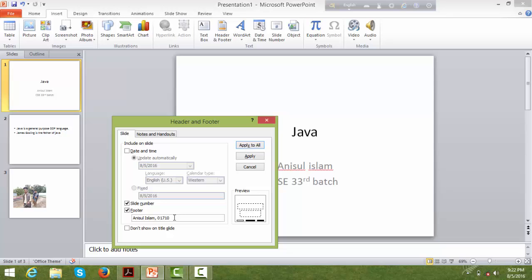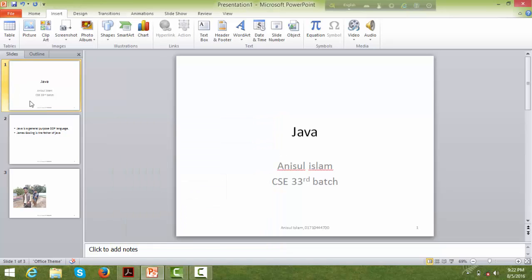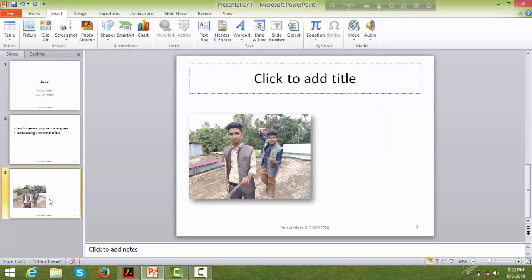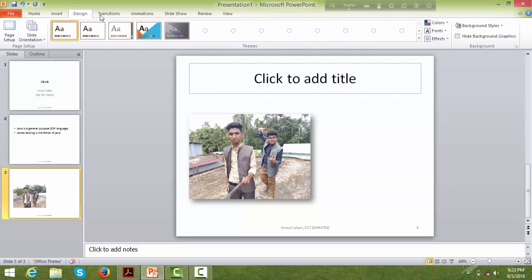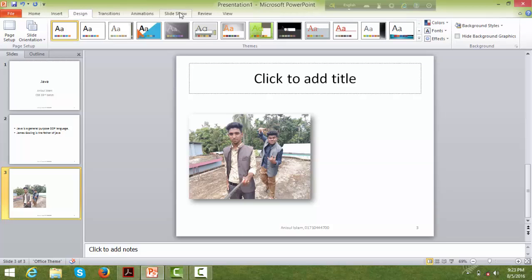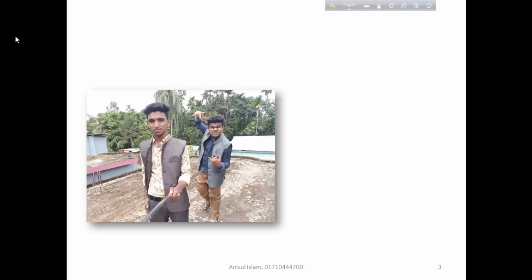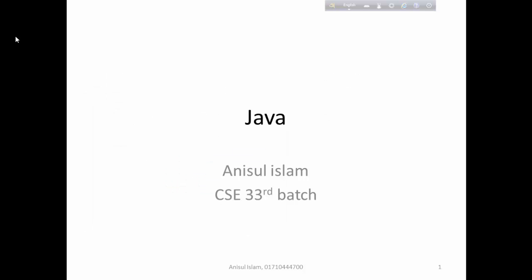You can enter a phone number or other information in the footer field — for example, something like 01710447. After entering the information, click 'Apply to All' to apply the footer to all slides. The slide number will appear at the bottom of each slide.